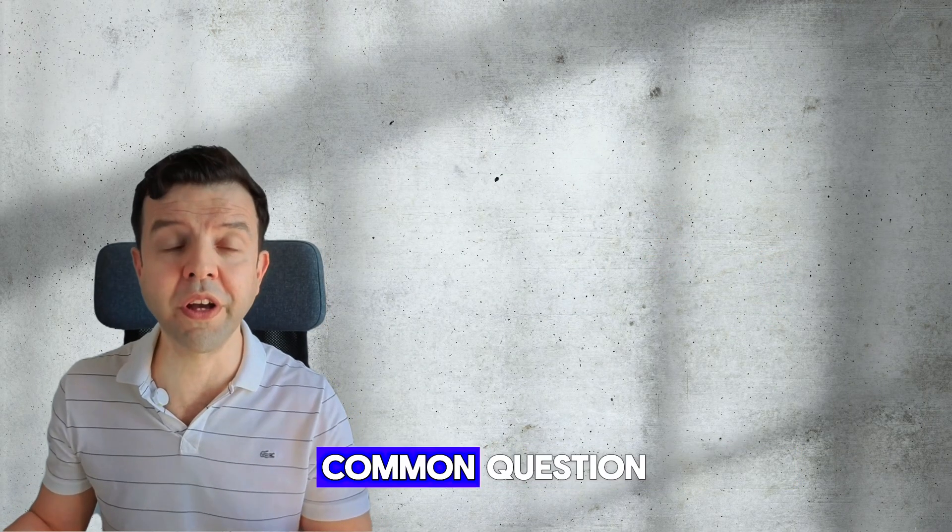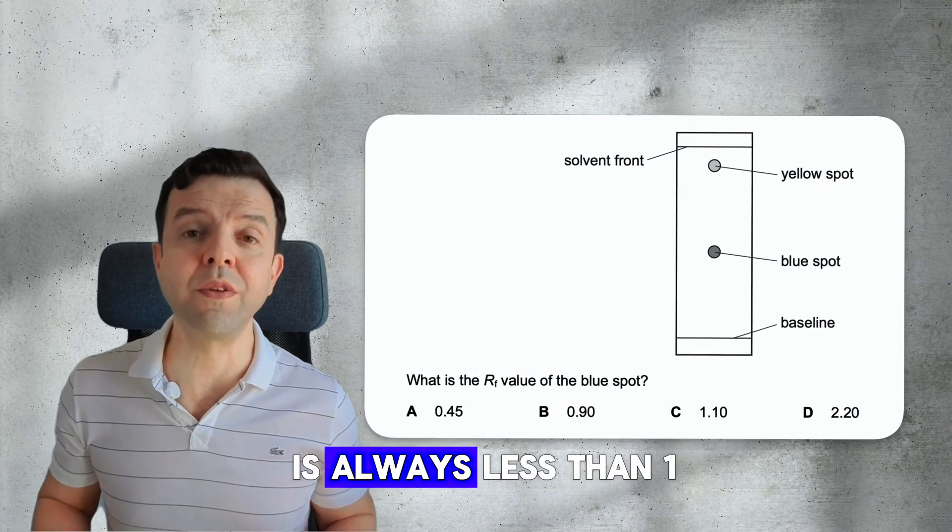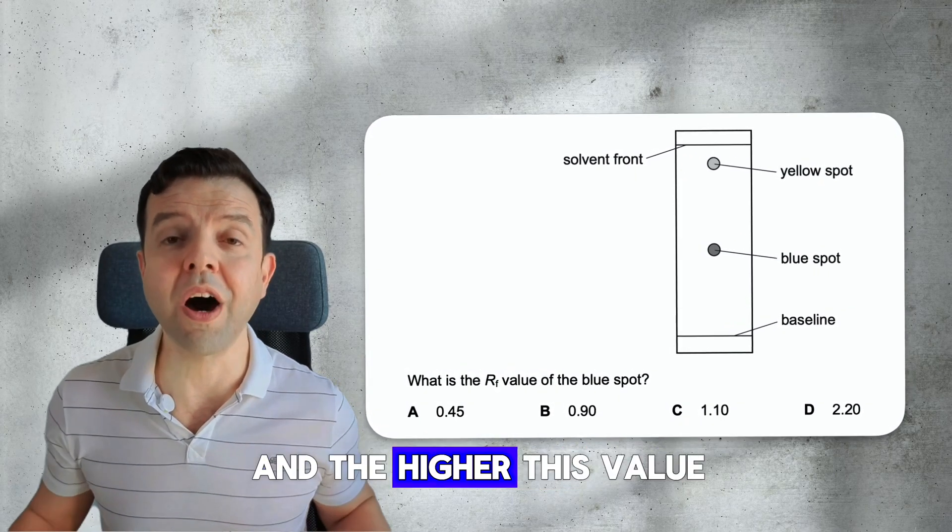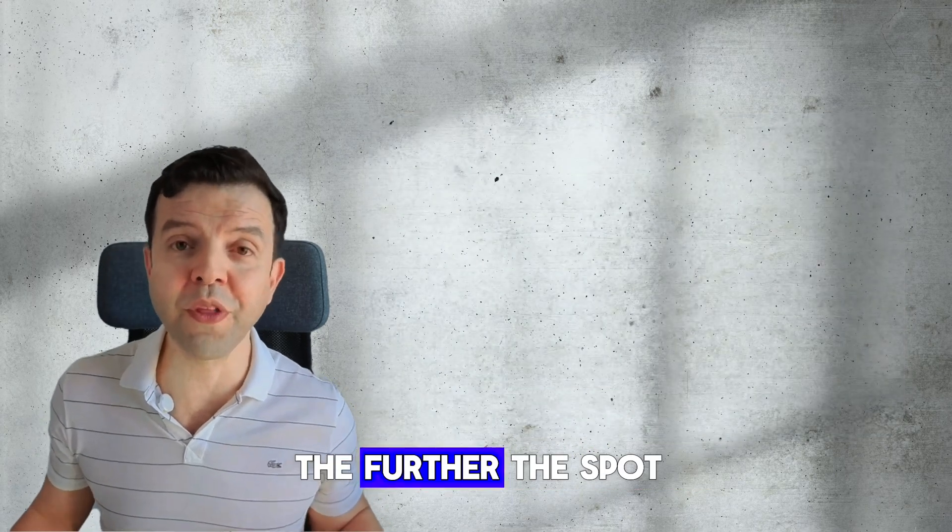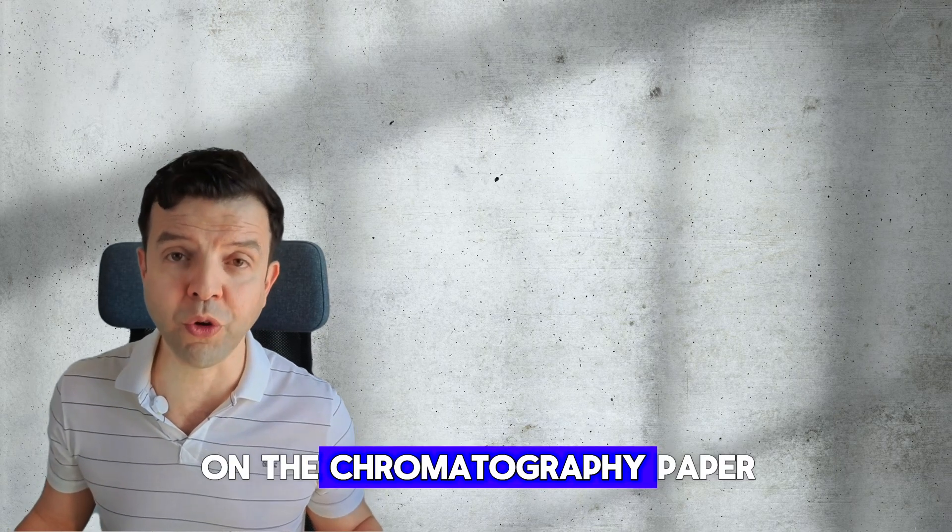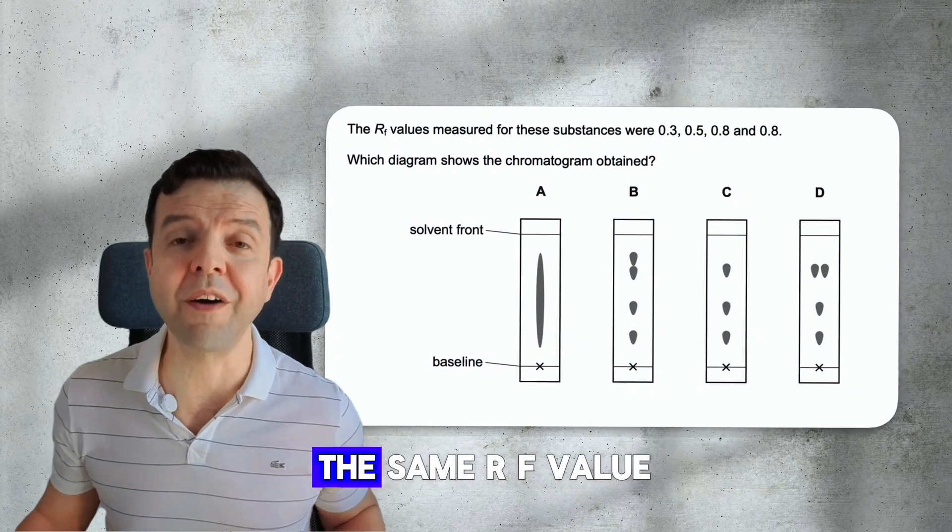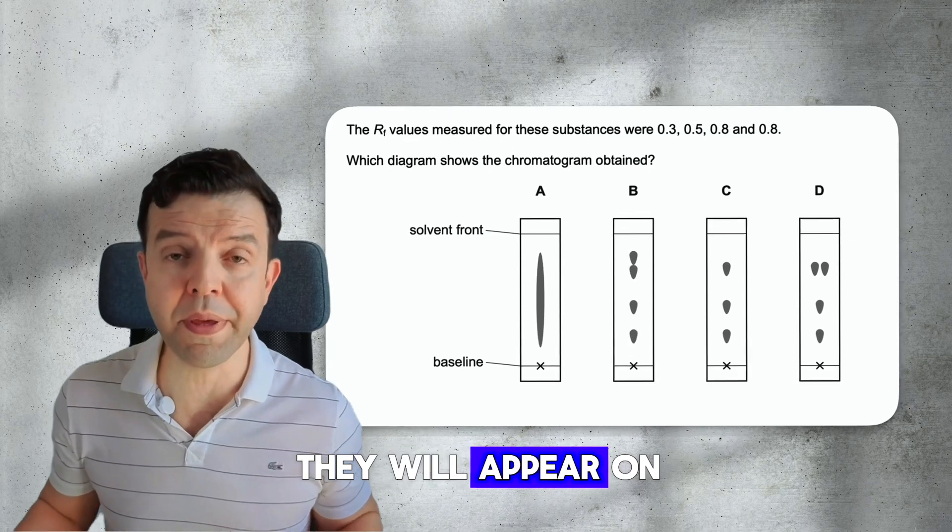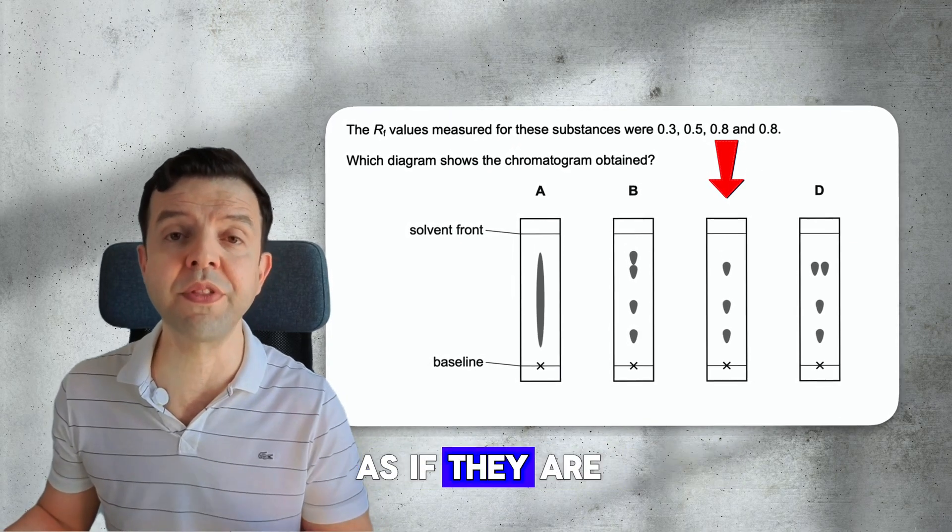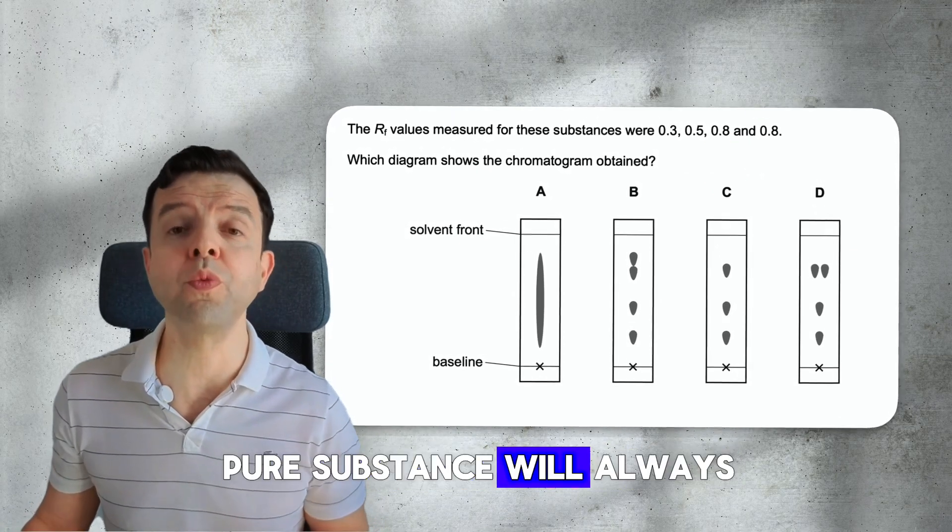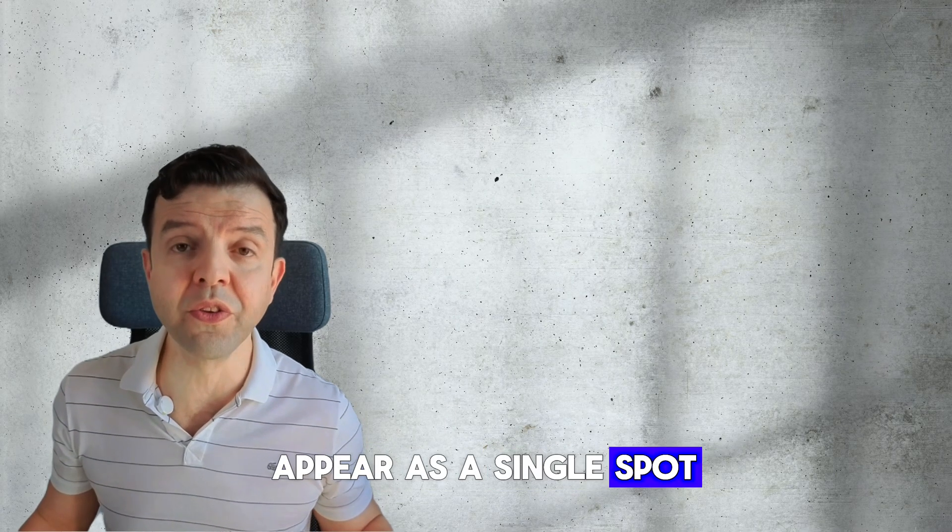Let's talk about chromatography, which is a very common question. The RF value is always less than 1, and the higher this value, the further the spot will appear on the chromatography paper. If two pigments have the same RF value, they will appear on the chromatography paper as if they are one spot. A pure substance will always appear as a single spot.